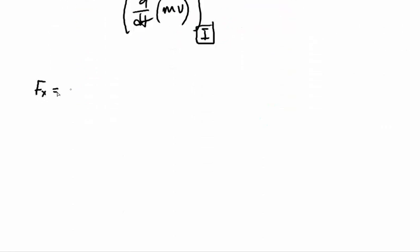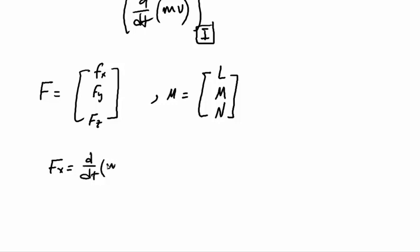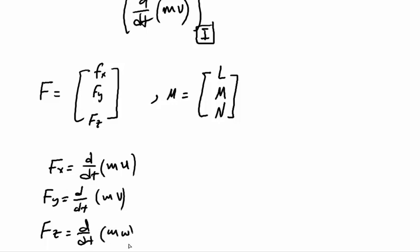For the summation of forces there are components Fx, Fy, and Fz. For the summation of moments there are three components called L, M, and N. Then Fx equals the time rate of change of m times u, Fy equals d/dt of m times v, and Fz equals the time rate of change of m times w. Here u, v, and w are the velocity components.